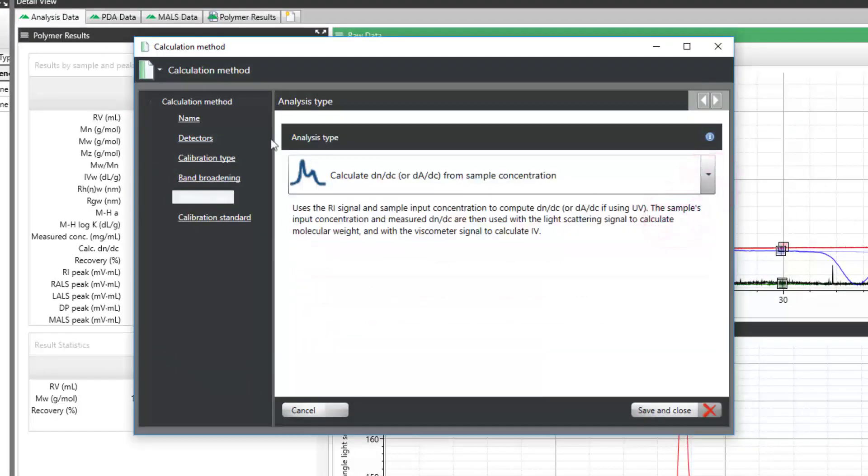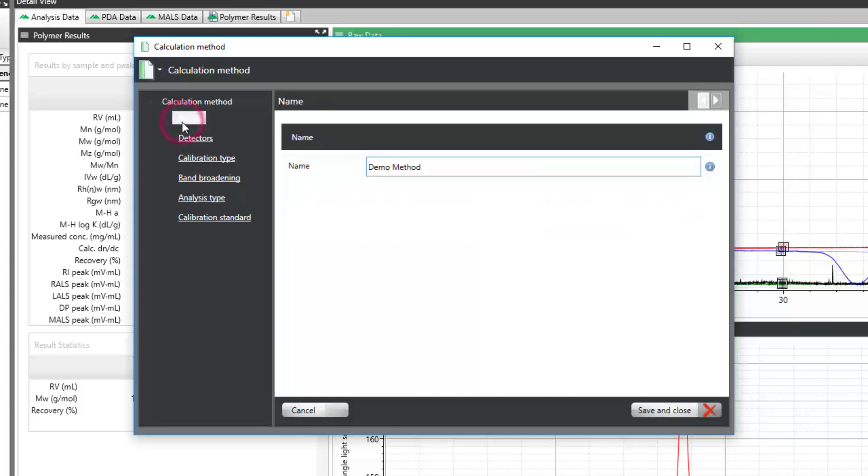After you do this, I recommend adjusting your calculation method name to indicate that DNDC will be calculated. Then finish creating or editing your method and click Save and Close.